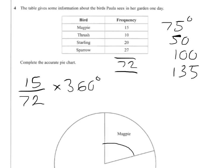Now you can do all of those with the calculator. So for example, if you want to do thrush, you can just do 10 out of 72 times 360, and you'll get an answer of 50.